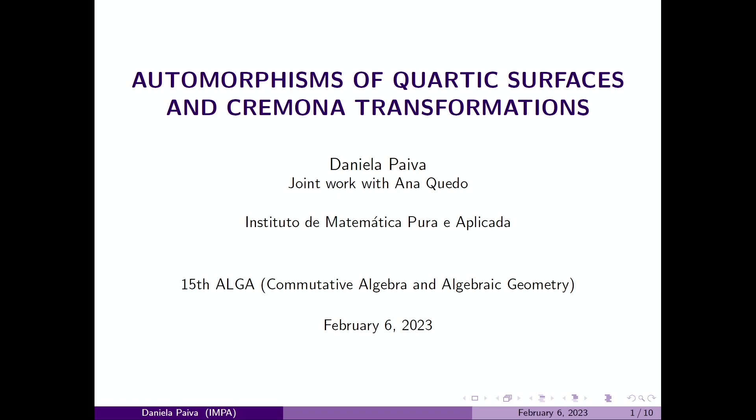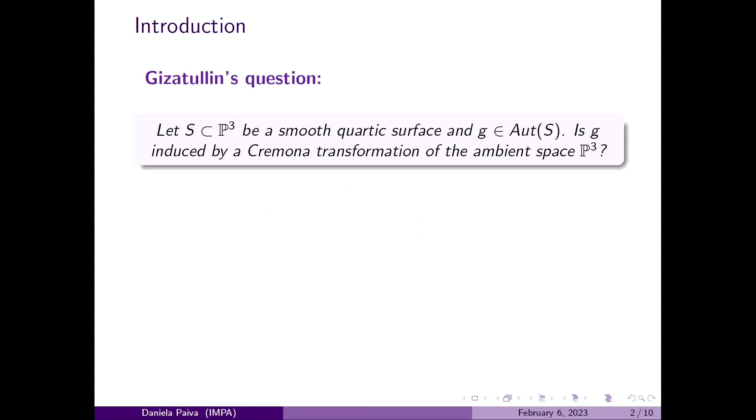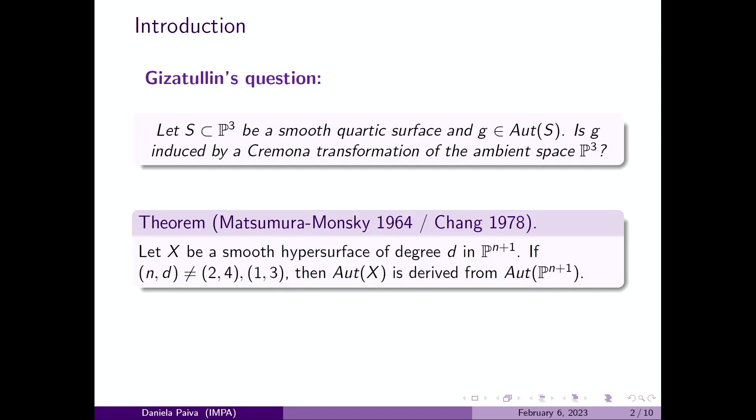Let me start with an introduction and motivation. We are always working over the complex numbers. The problem that we are interested in is based on this question that is due to Gizatullin, which says that given a smooth quartic surface in P³, he asked which automorphisms of the surface are induced by Cremona transformations. This is a special question for quartic surfaces in P³ because Matsumura, Monski, and Shang proved that if we have a hypersurface of degree D in P^(n+1) such that it is neither a cubic in P² nor a quartic in P³,